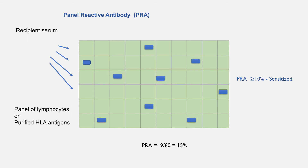There are different levels of PRA beyond which a person is considered to be sensitized, and beyond some point, a person is considered highly sensitized. In the case of kidney transplant, if PRA is 80 percent or more, the person is considered highly sensitized. In this situation, the person will receive additional points on the waiting list and will have priority in transplant.